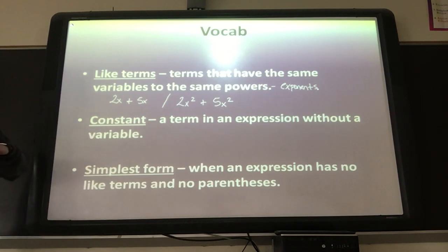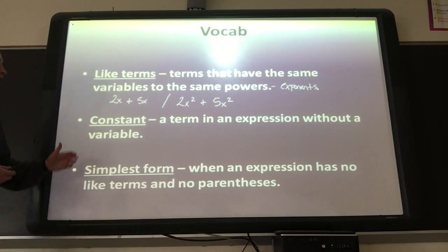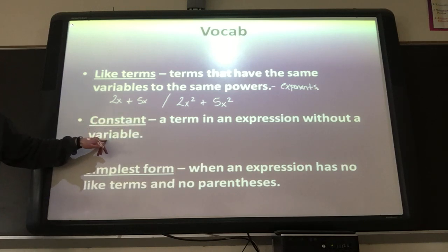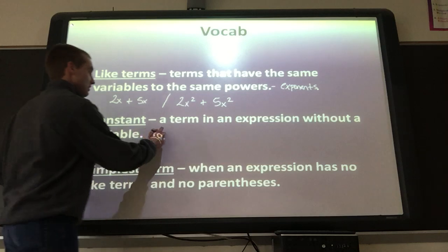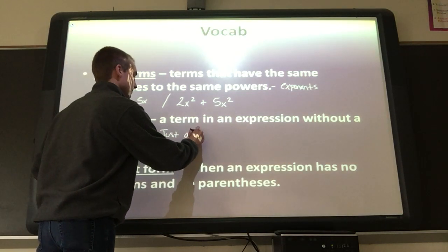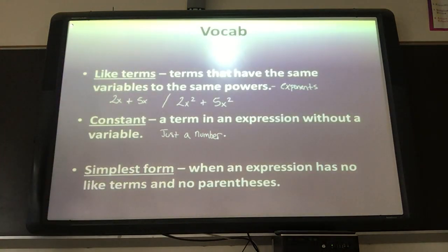A constant — in math we've talked about the word constant, like constant rate of change. In an expression, a constant is a term without a variable. In other words, it is just a number. A constant is just a number; it does not have a variable with it.